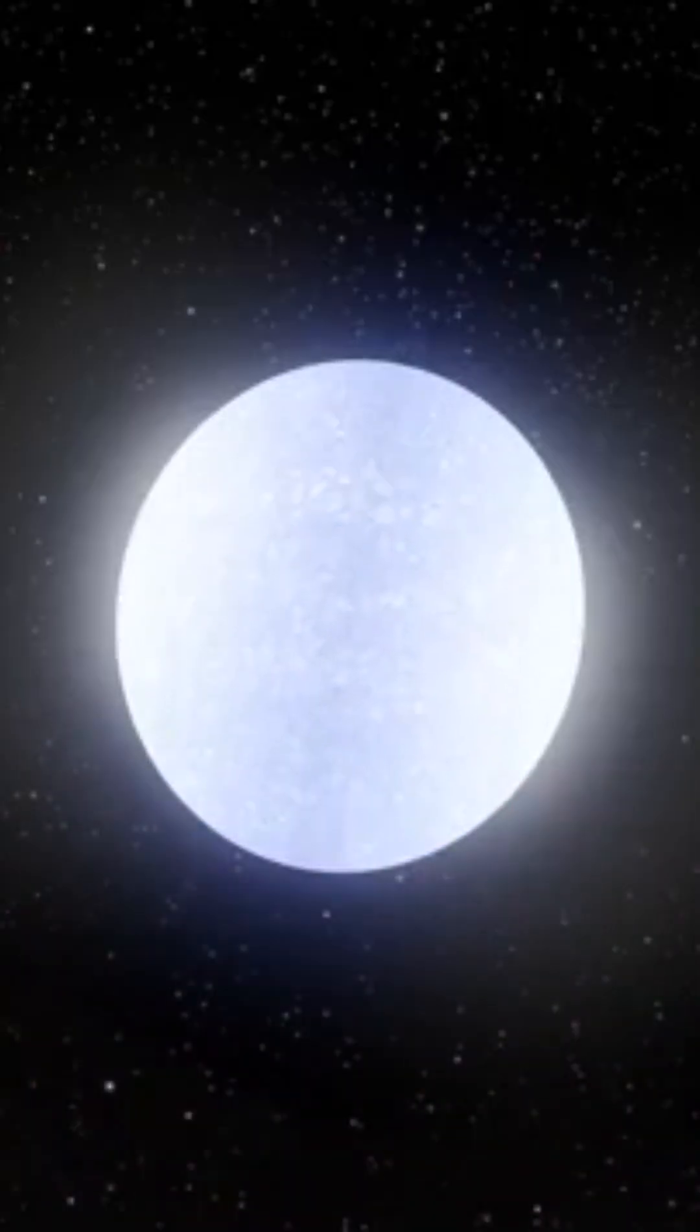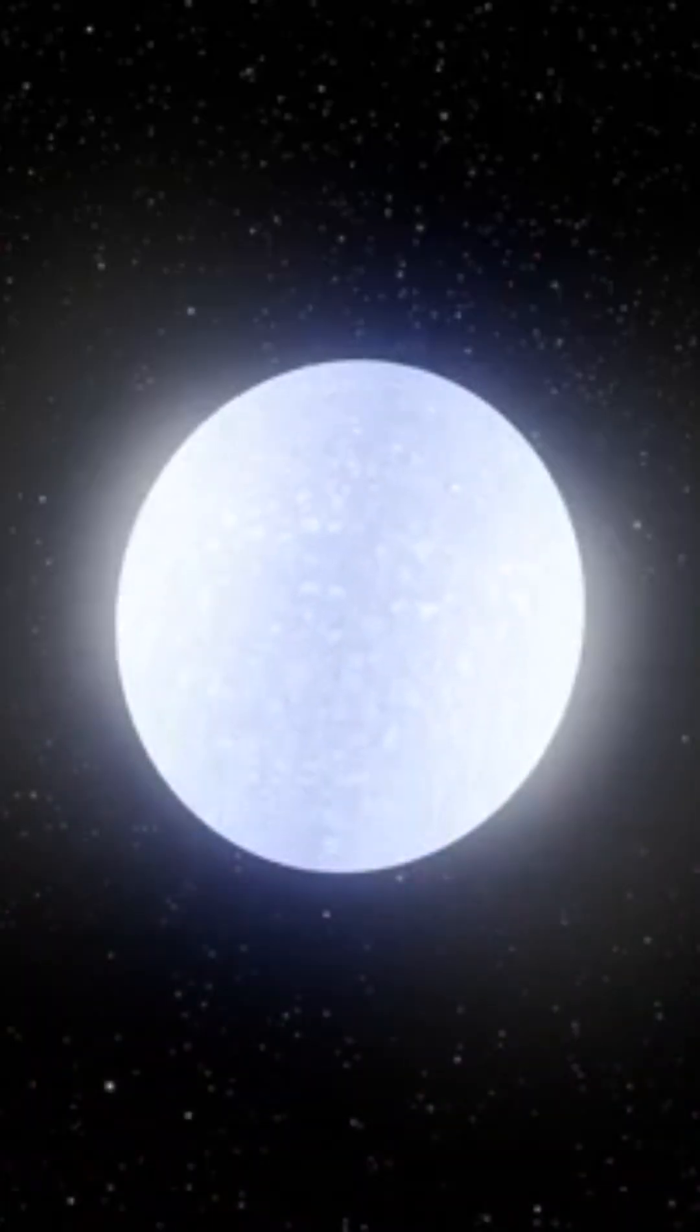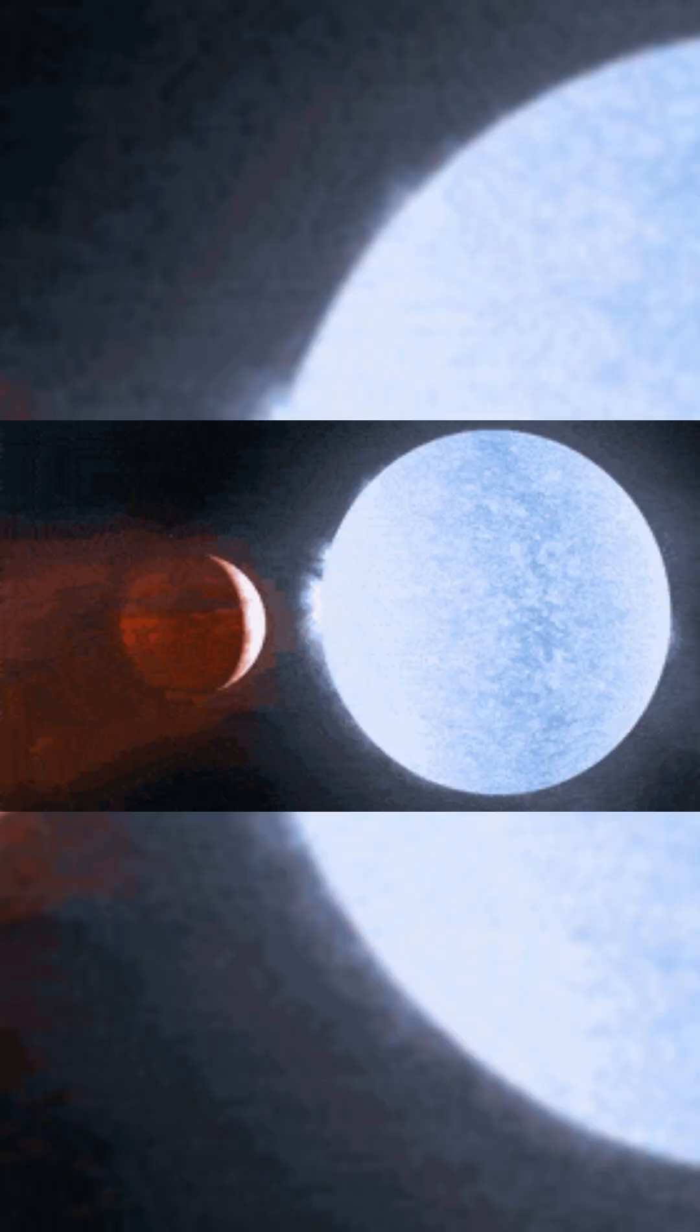The planet's destiny is one of tidal locking, with a perpetual daylight side facing its star, while the opposite side languishes in eternal darkness. On the day side, an astronomical 44,000 times more energy bombards KELT-9b than Earth receives from the Sun.